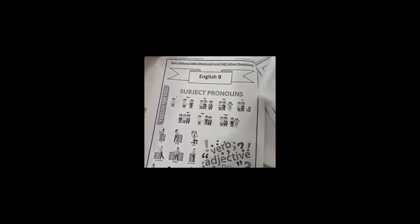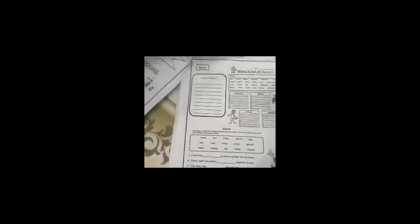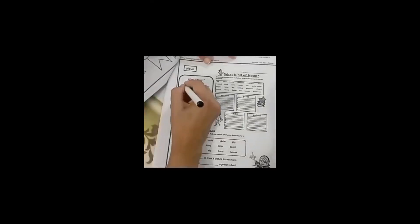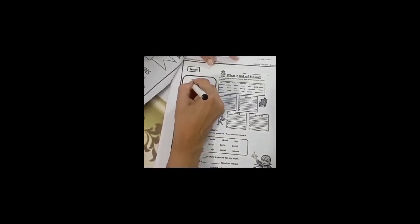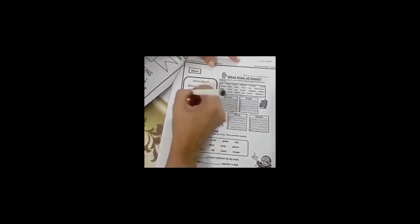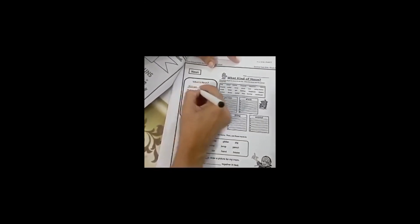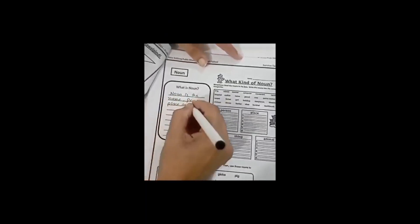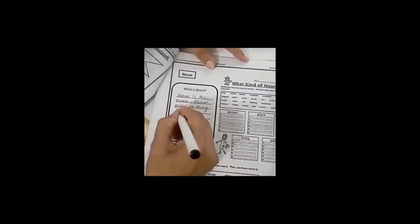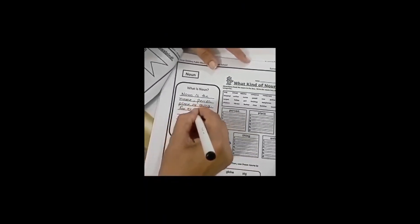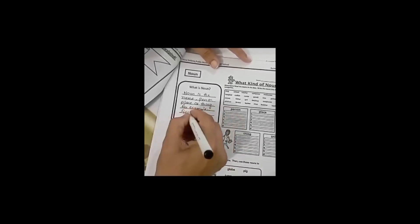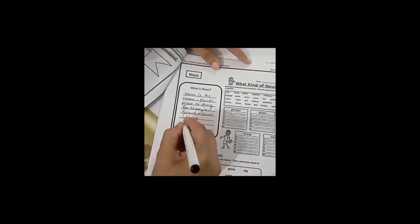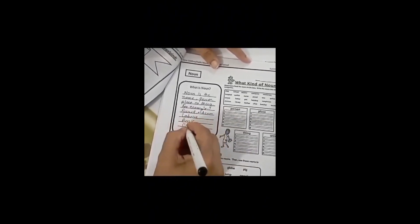Today we are going to do the summer task of English B. Open page number 18 of your booklet. Look at question number 1. The question is noun. What is noun? Noun is a name of person, place, or thing. For example, Kaidaism, Lahore, book, cat, etc.